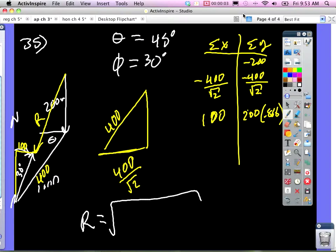Just to be safe, alright, so I'm just adding up all the x and y components. That's going to give me sum of the x and sum of the y, and I'm going to take the sum of the x squared plus the sum of the y squared.